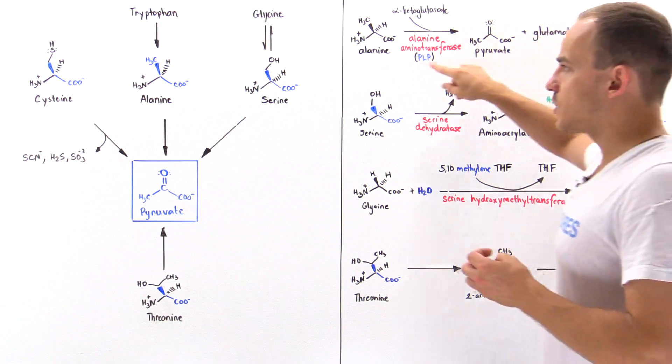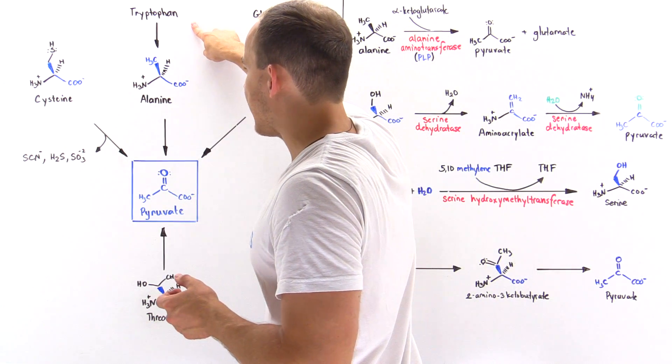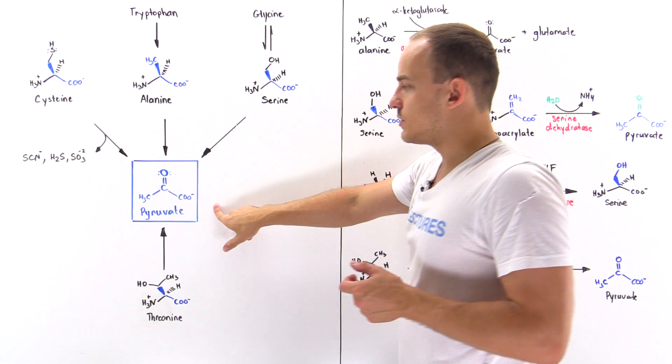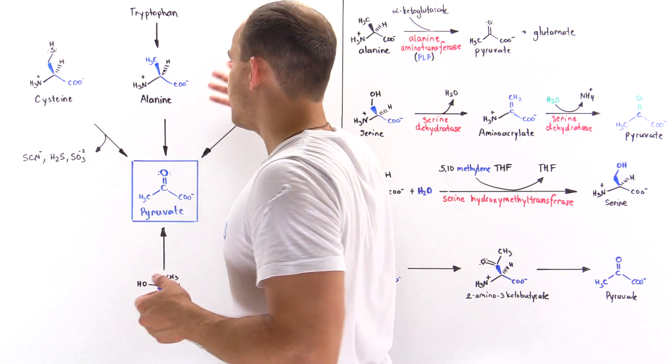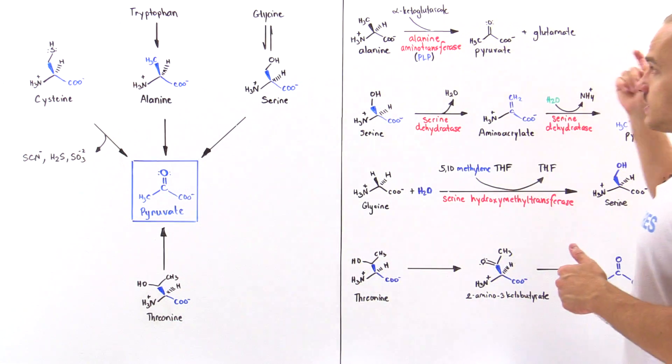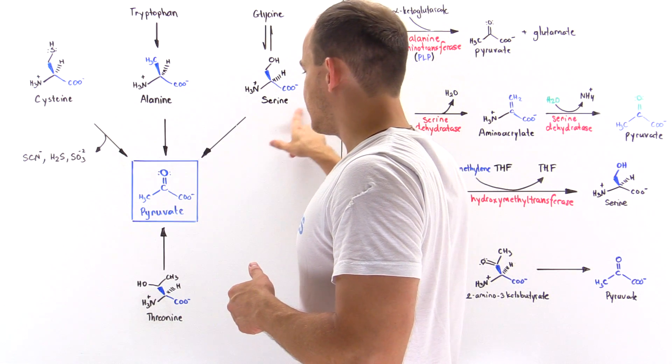So that's how we go from alanine to pyruvate. Now tryptophan basically is transformed into pyruvate by first converting tryptophan to alanine, and then alanine basically follows this step to form the pyruvate. Now let's move on to serine.